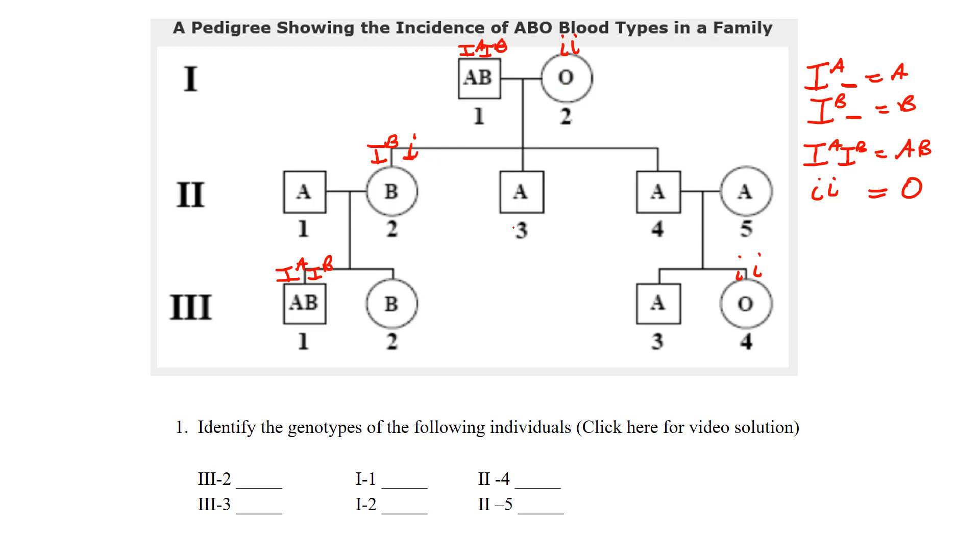So we know he's heterozygous for B blood. Same with this individual here - baby or the son was I^A because it's A blood, but mom can only donate a little i. Same with this one as well, so we can fill in lots of these here.